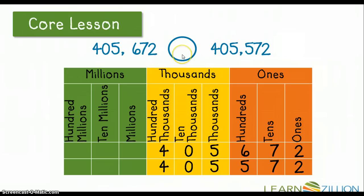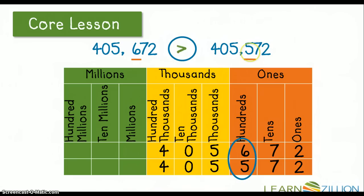In my little circle here, where I'm comparing these two numbers, I can see that my 6 is larger or greater than my 5. My 6 is in the hundreds place and my 5 is in the hundreds place, and I know that 600 is greater than 500. So I would put in my greater than sign. And remember, if it helps to think of it as an alligator, my alligator is chomping the larger number. So I would read this: 405,672 is greater than 405,572.